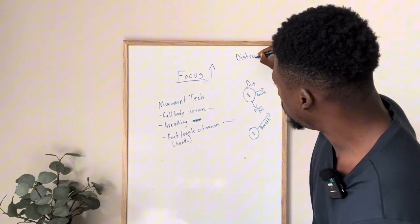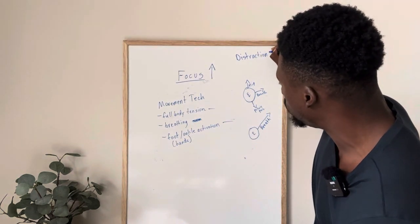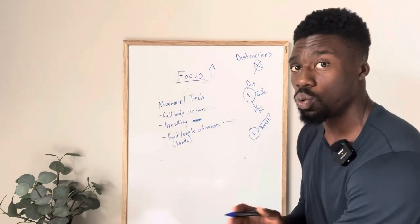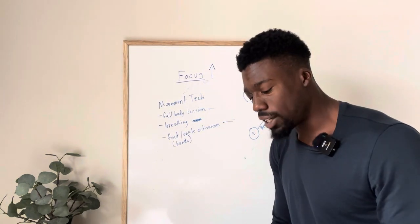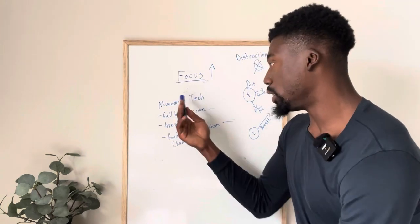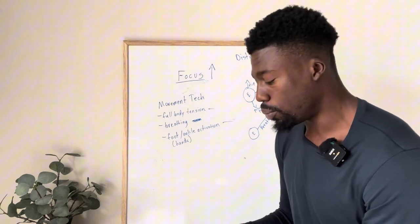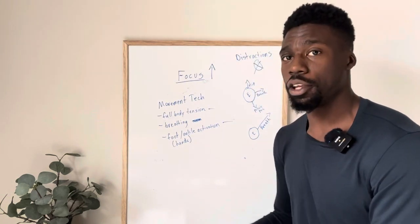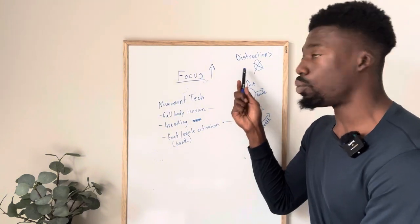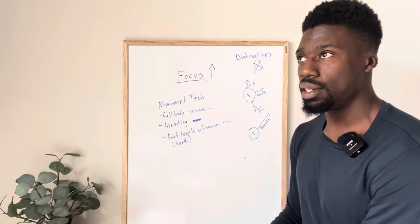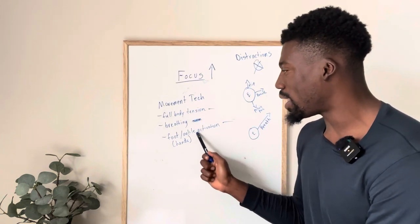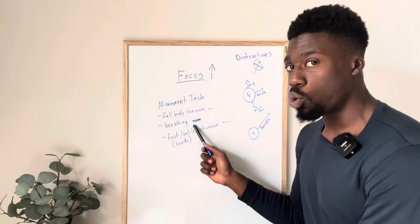You want to limit distractions to increase focus. You want to get rid of as much as possible. You really want to make sure that as you're working to rewire your movement, balance out your body, get rid of movement dysfunction, you need to get rid of the distractions. In this example, a distraction is anything that's not one of these points of focus.